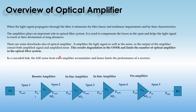We cannot use an unlimited number of optical amplifiers in any optical fiber system because the amplifier introduces noise in its output. In any cascaded link, the ASE noise from each amplifier accumulates and hence limits the performance of the receiver.